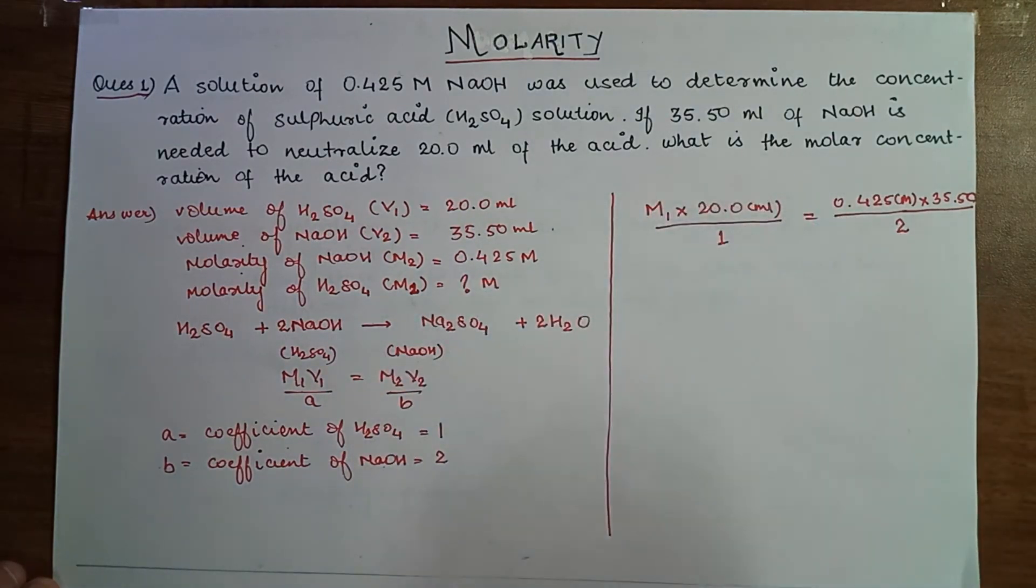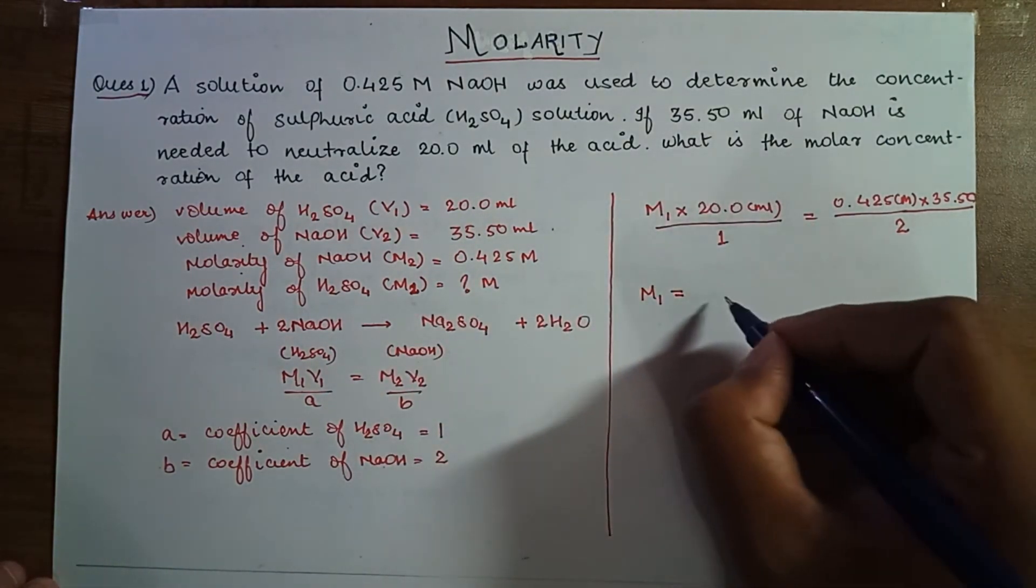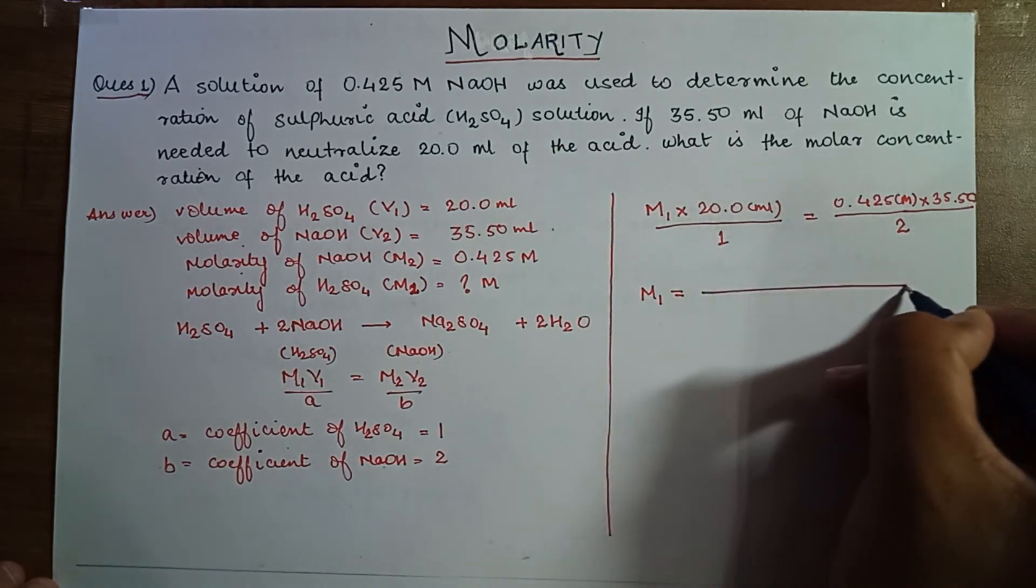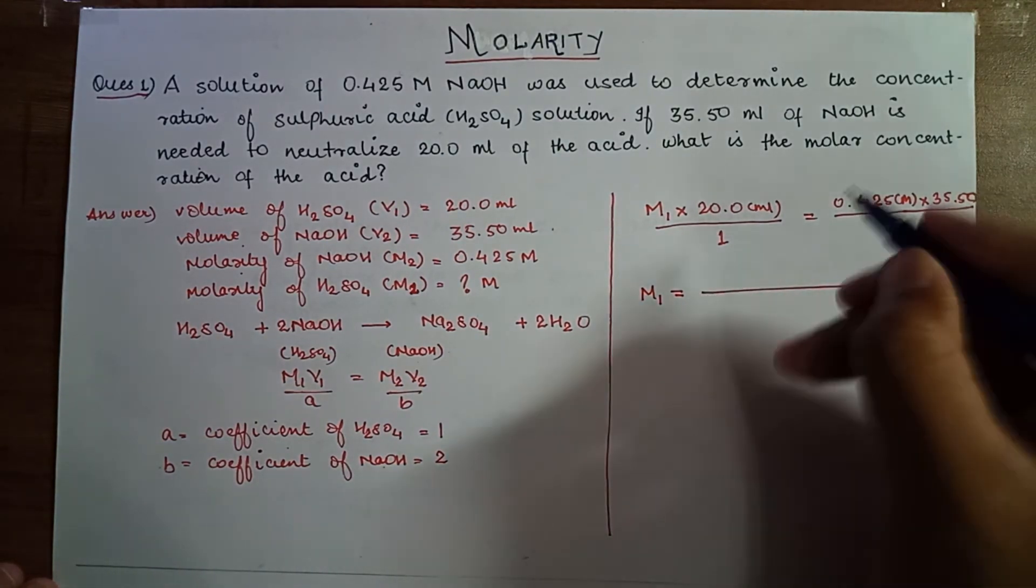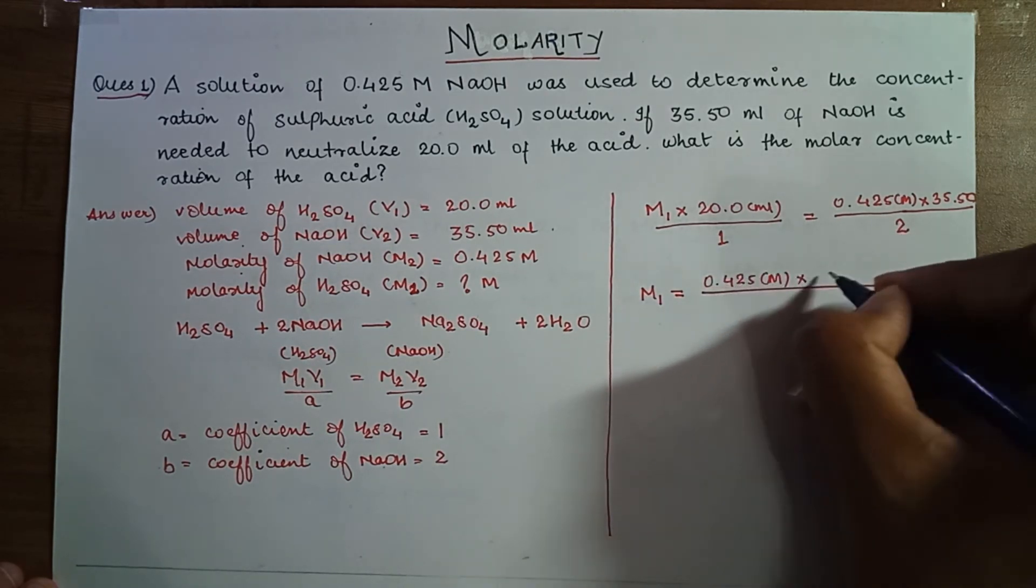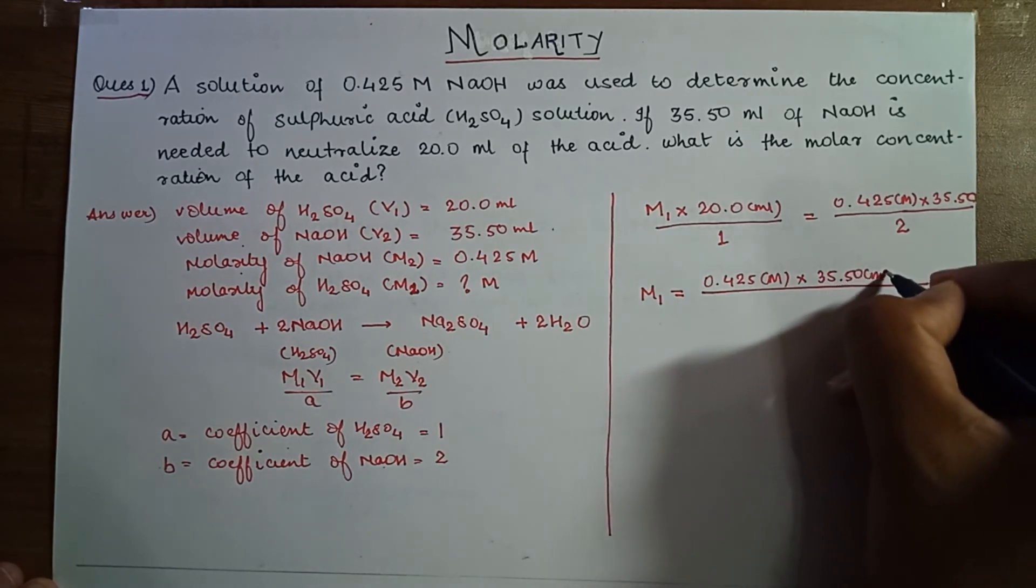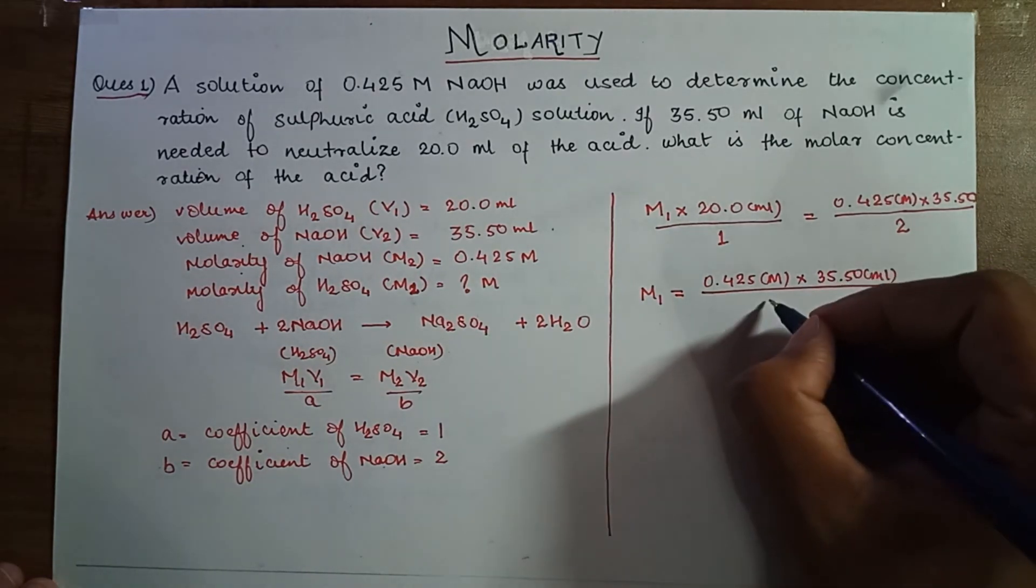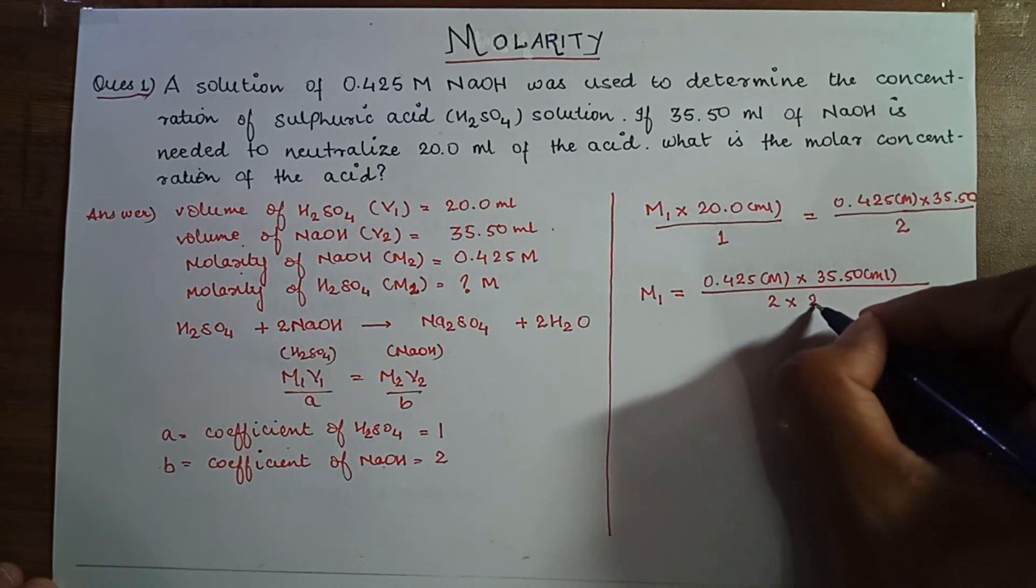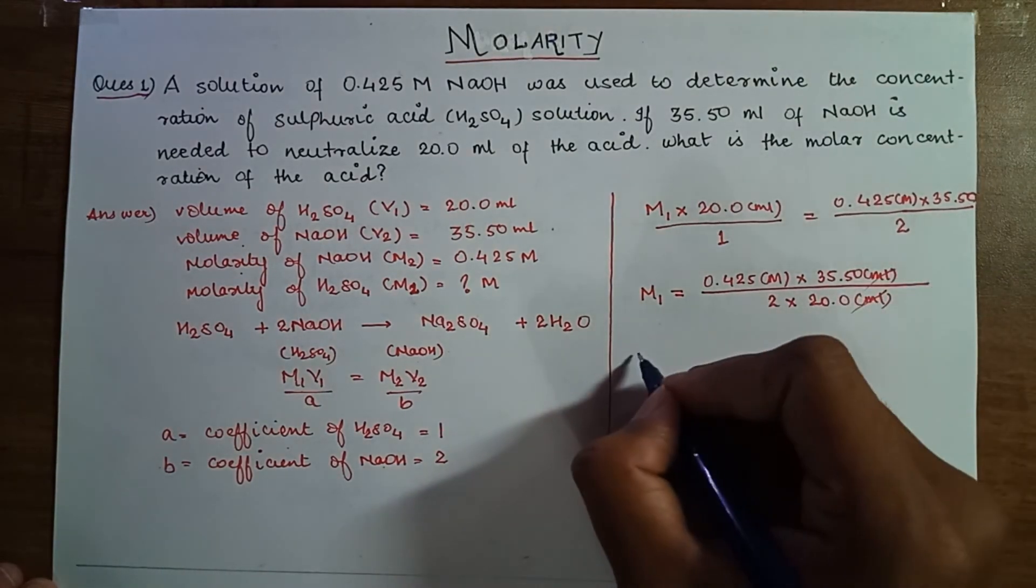M1 equal to, simply you can go for cross multiplication, that is 0.425 molar, multiplied by 35.50 ml, over 2 into 20.0 ml. ml cancel now.